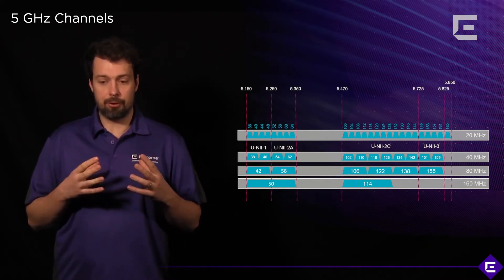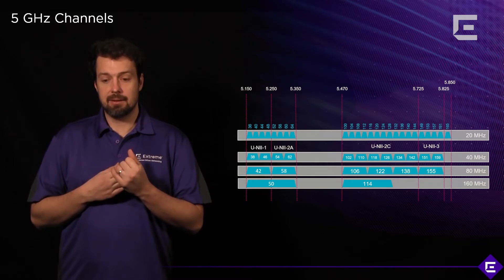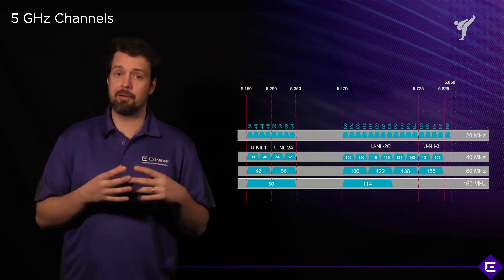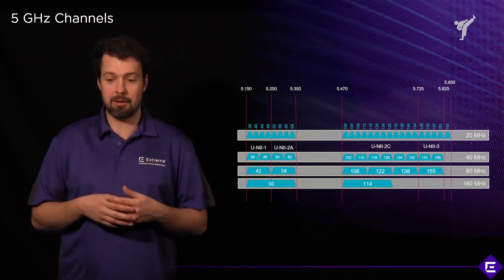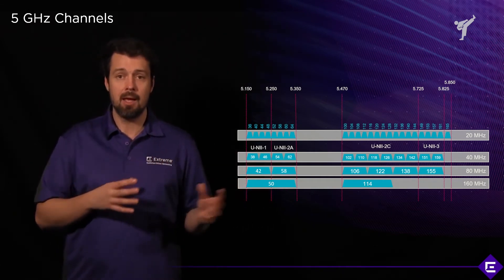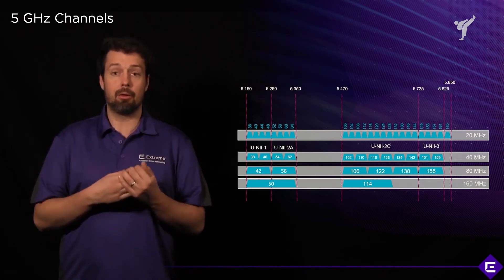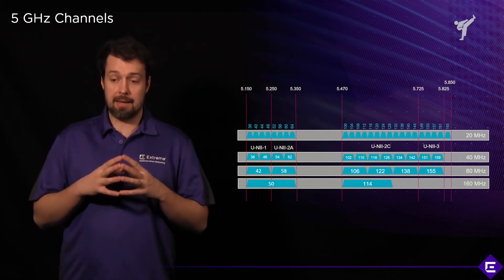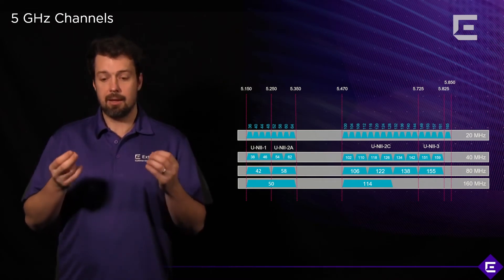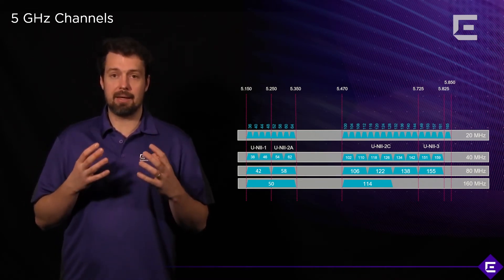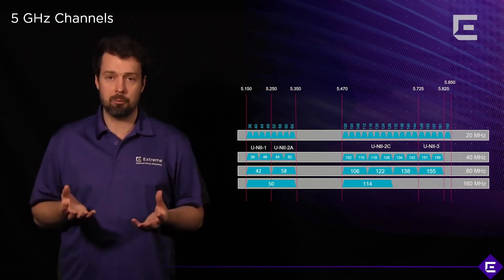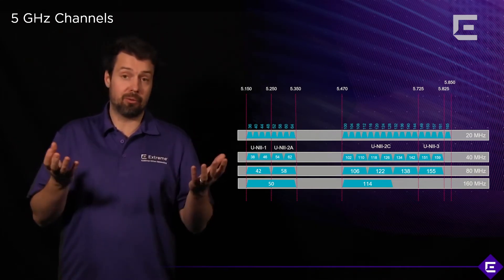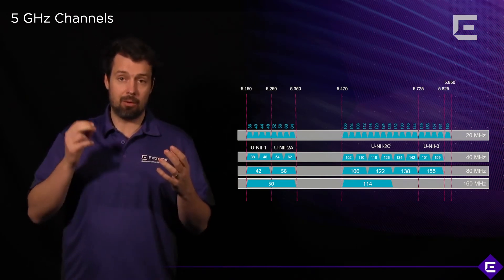The 5GHz frequency band offers more channels. One thing to note is that channel availability will depend on the regulatory domain where you find yourself. In some countries you might not have all the channels you see on screen, so please refer to your local authority. ExtremeCloud IQ will already enforce both power output and channel selection depending on which country you select when you onboard or create your instance.